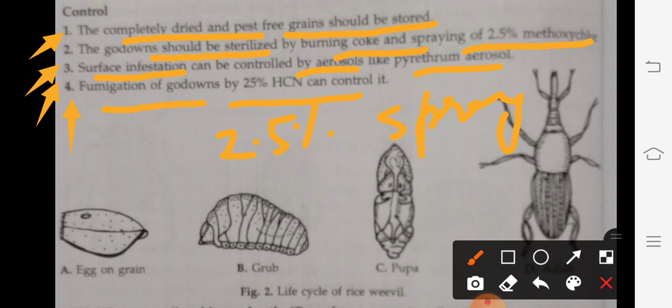So the main damaging stage is the grub. The question is: if it is a beetle, then what is the intermediate stage in the life cycle? That is the grub stage. For today we will do another pest of stored grain, so then bye bye, take care.